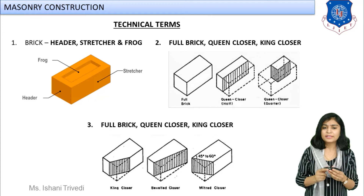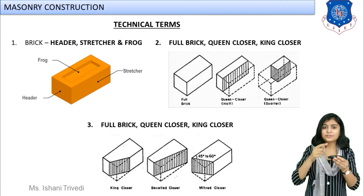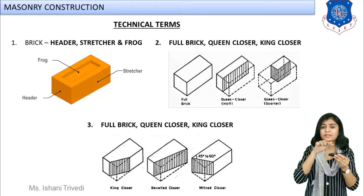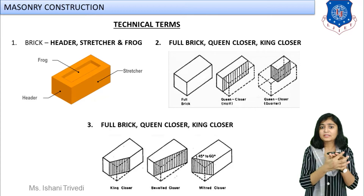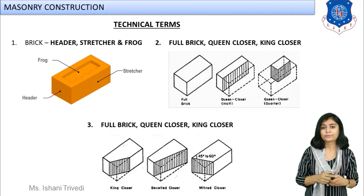Next we have the beveled closer — cut from the corner such that the width is cut half but the length is cut fully. Then, doing the reverse — from the corner, the width is fully cut but the length is cut three-fourths — that is known as the mid-bat closer.